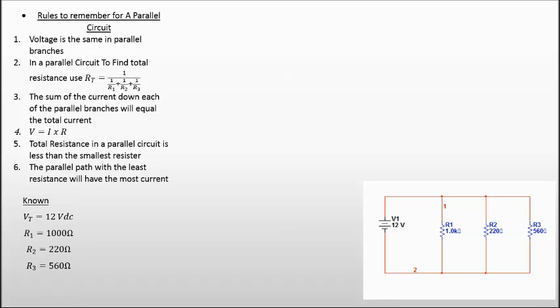So what are we given? We're given that V total is 12 volts DC, R1 is 1000 ohms, R2 is 220 ohms, and R3 is 560 ohms.